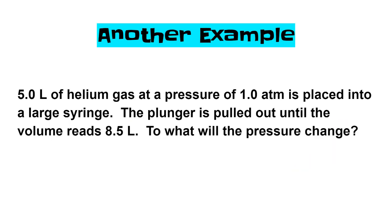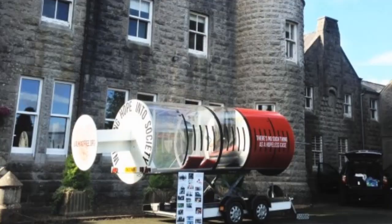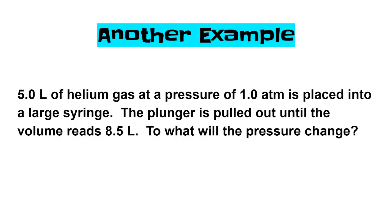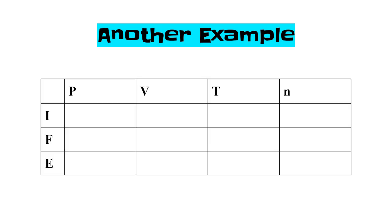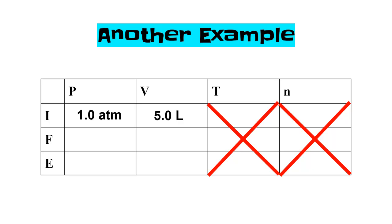Let's do another example. I have 5.0 liters of helium gas. The pressure is 1.0 atmospheres. I put it in a large syringe - that would be a ginormous syringe, but still, let's just stick with it. We pull the plunger out until the volume goes up to 8.5 liters. What's the pressure going to change to? Set up our table. We know that we're not going to be talking about temperature - it doesn't mention anything about temperature, and it doesn't mention anything about particles. Let's fill in our I table for pressure and volume. It tells me that I have 5 liters and that the pressure is 1 atmosphere. It tells me that I'm changing the volume to 8.5 liters. I want to know what does the pressure change to?